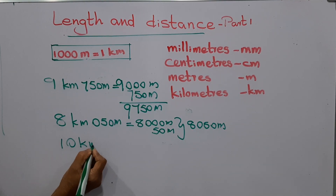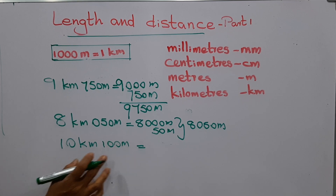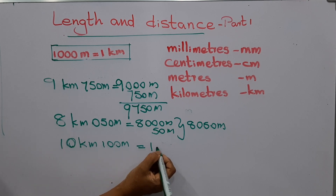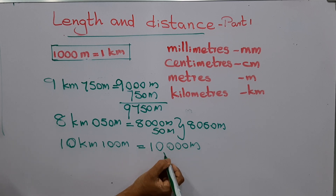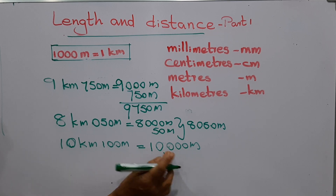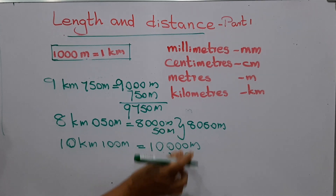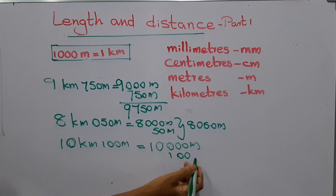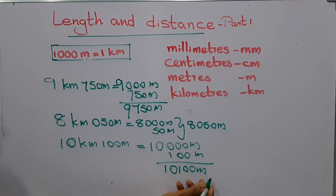Ten kilometers and one hundred meters — write in meters. Ten kilometers means ten thousand meters, plus one hundred meters. Write under the proper places: total it gives ten thousand one hundred meters.